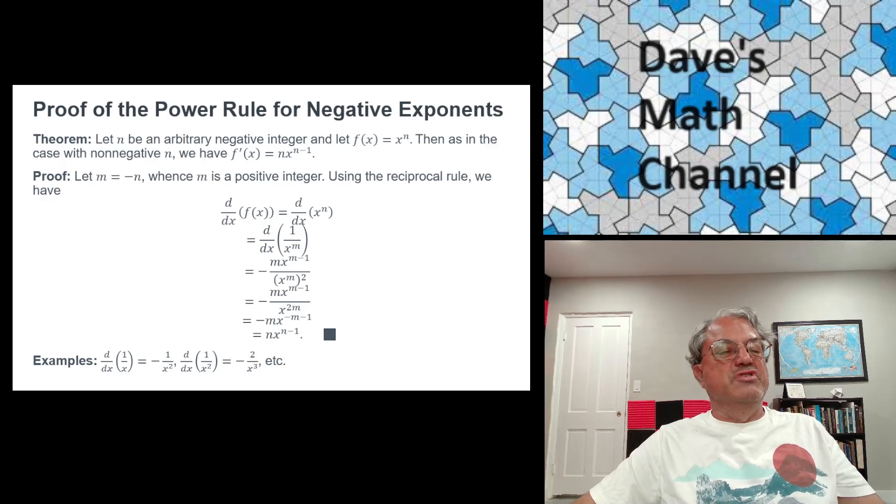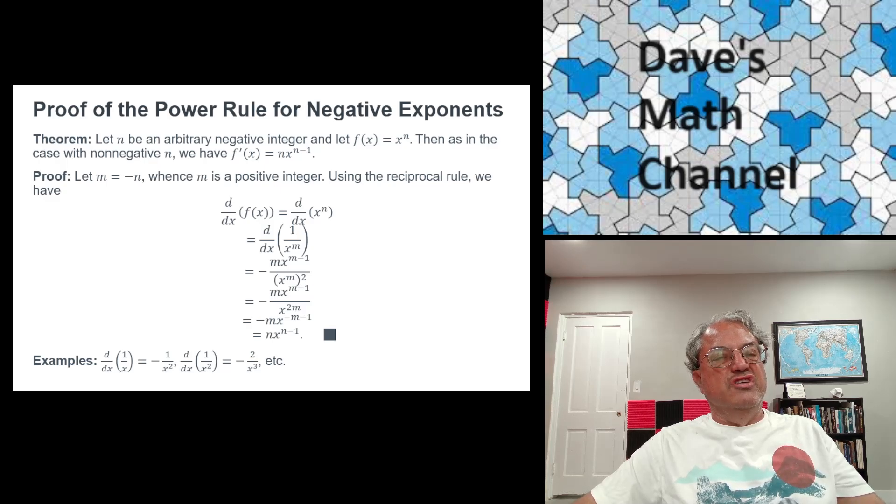So it works for negative exponents as well as non-negative exponents. Here are a couple examples. The derivative of 1/x is -1/x^2—that's worth memorizing since you see it a lot, especially in physics. The derivative of 1/x^2 is -2/x^3. The derivative of 1/x^3 is -3/x^4, and so on.